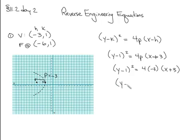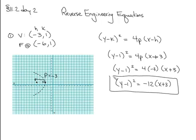And simplifying, we get Y minus 1 squared is equal to negative 12 times X plus 3. We're done. That's the whole problem.